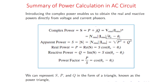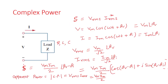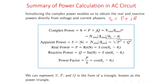To summarize: complex power is P + jQ, where P is the real power and Q is the imaginary (reactive) power. Real power is VRMS·IRMS·cos(θv − θi) and reactive power is VRMS·IRMS·sin(θv − θi). Apparent power is the magnitude of the complex power: |S| = VRMS·IRMS = √(P² + Q²).